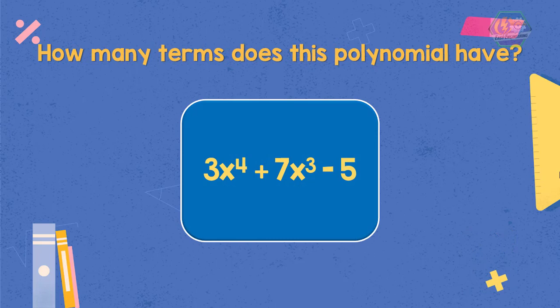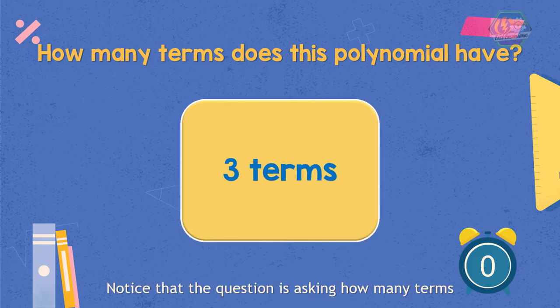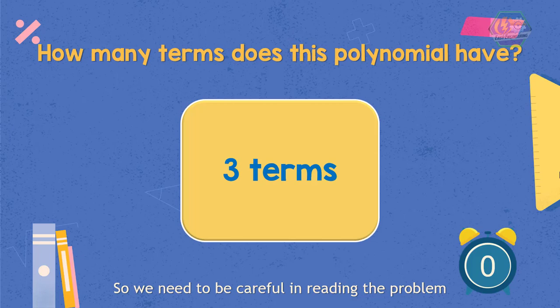Now, how about this problem? How many terms do this polynomial have? 3x to the power of 4 plus 7x cubed minus 5. That's right! This polynomial has 3 terms. Notice that the question is asking how many terms, not the degree of terms. We need to be careful in reading the problem.